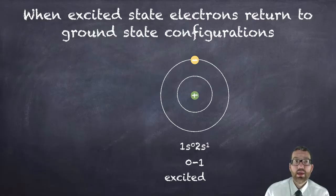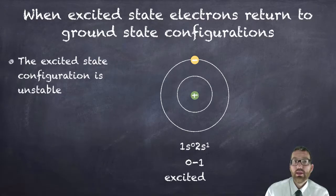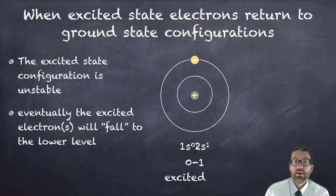Next we need to talk about what happens when excited state electrons return to ground state configurations. When they're in an excited state the electron configuration is unstable. See it shaking there. Eventually that excited electron is going to fall back down to the lower level. Can't stay excited forever.